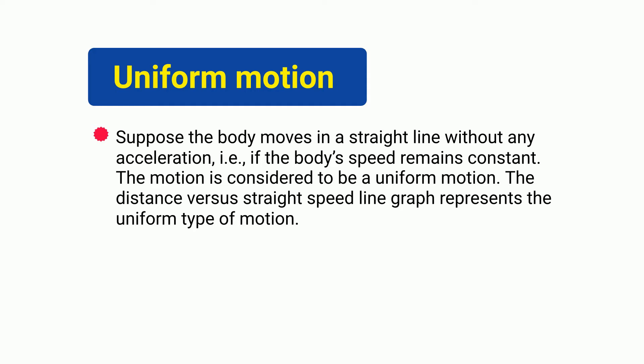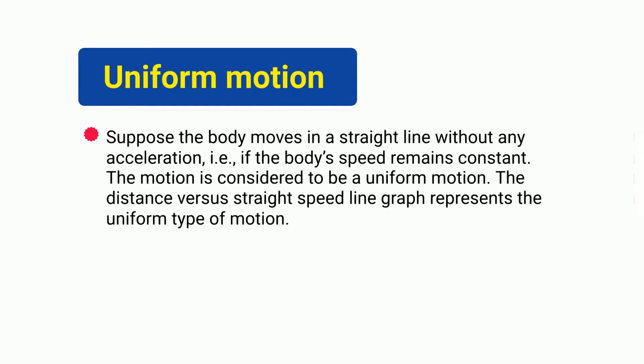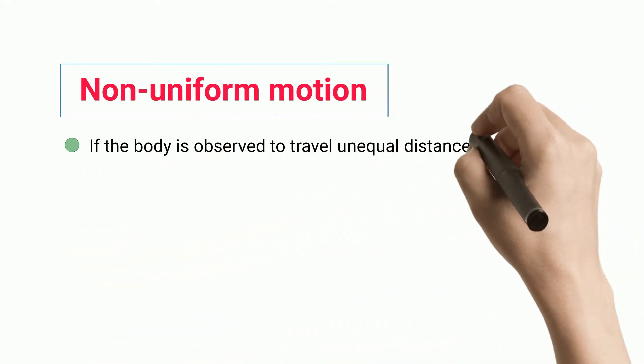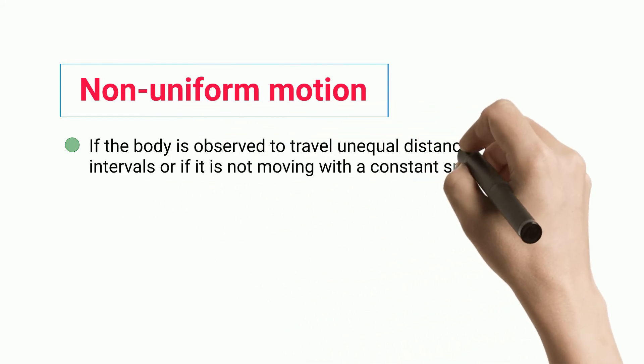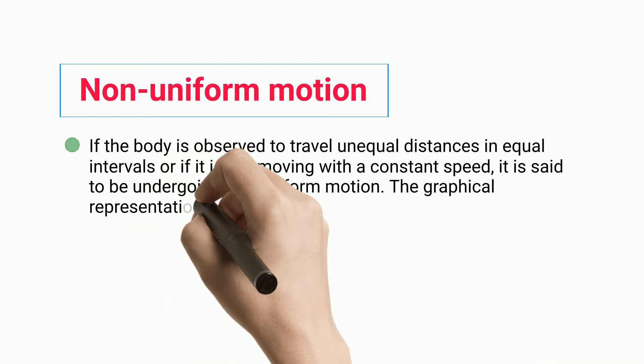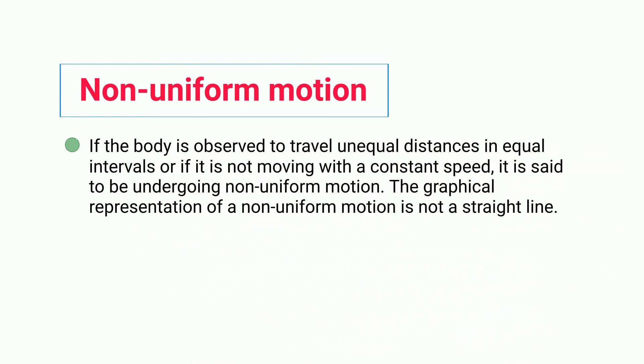The distance versus speed line graph represents the uniform type of motion. Non-uniform motion: if the body is observed to travel unequal distances in equal intervals or if it is not moving with a constant speed, it is said to be undergoing non-uniform motion. The graphical representation of non-uniform motion is not a straight line.